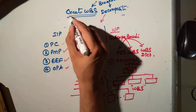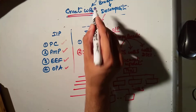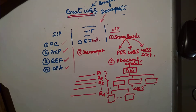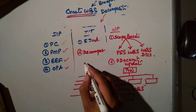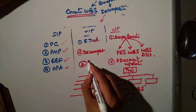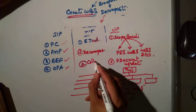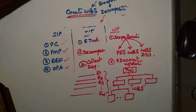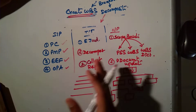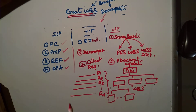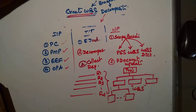This is a very small class on Create WBS. Just remember the second process — Collect Requirements — and the tools; the other items are just one or two extras. Let's move to the next one.